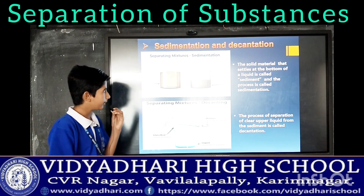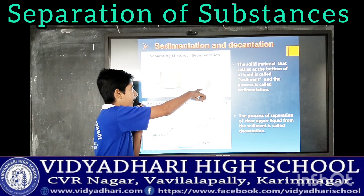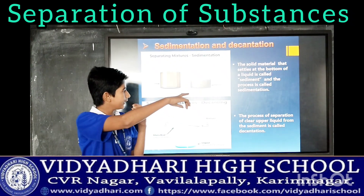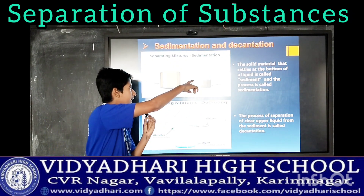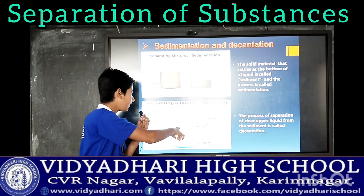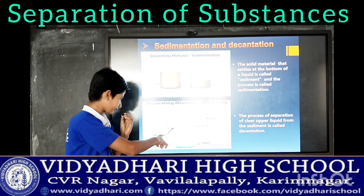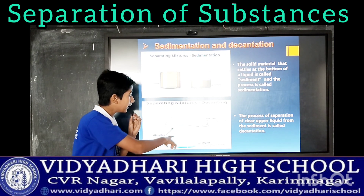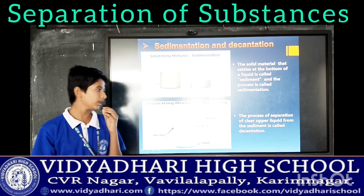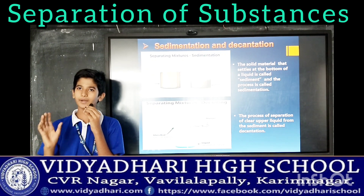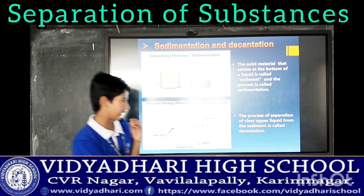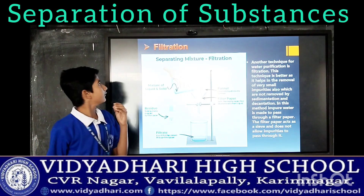Look at the picture. The water is separated from mud. The mud is called sediment and the total process is called sedimentation. Now let us discuss about decantation. The upper clear liquid is poured into another container with the help of a glass rod without disturbing the sediment — this is called decantation. The process of separation of the clear upper liquid from the sediment is called decantation.